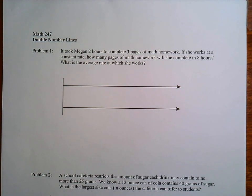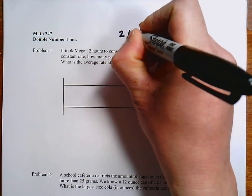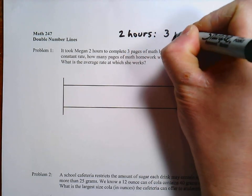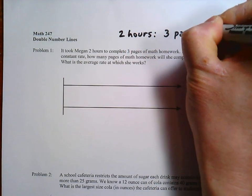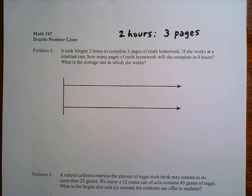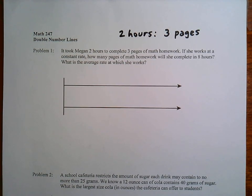So I'm going to do these two problems. This first one says it took Megan 2 hours to complete 3 pages of math homework. So I'm going to write that down first. She works at a constant rate. How many pages of math homework can she get done in 8 hours?